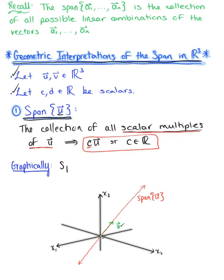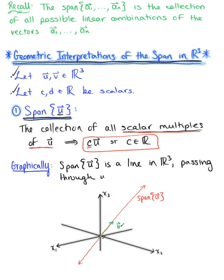So graphically, the span of vector u is a line in R3 that passes through vector u and the origin, or the zero vector. The span of a single vector is the collection of all scalar multiples of that vector, and graphically the span is a line in R3 that passes through vector u and the zero vector.